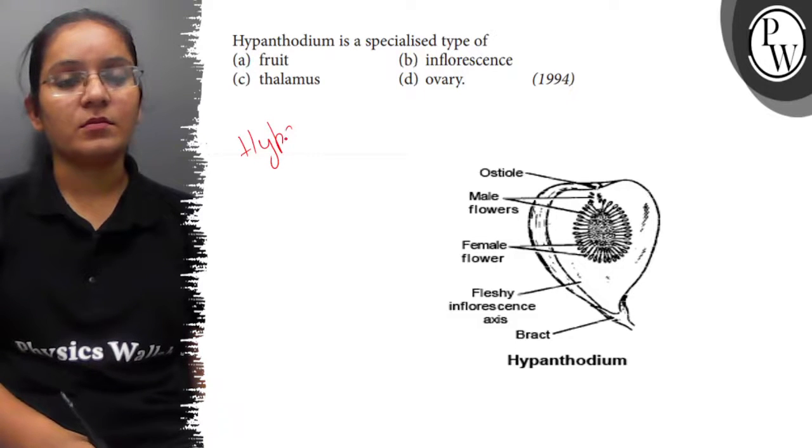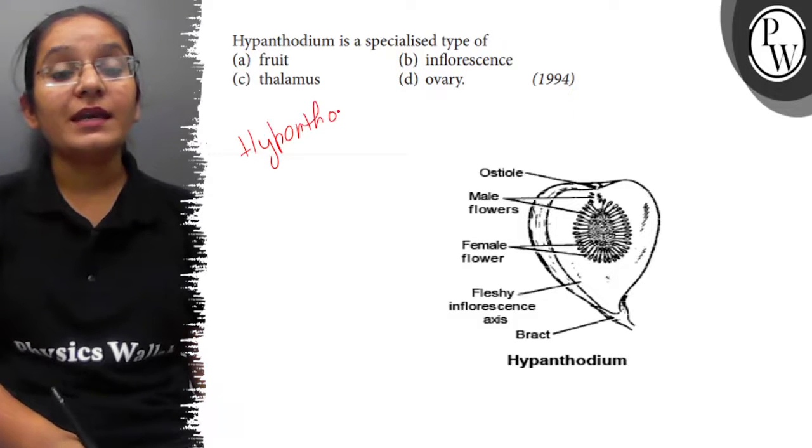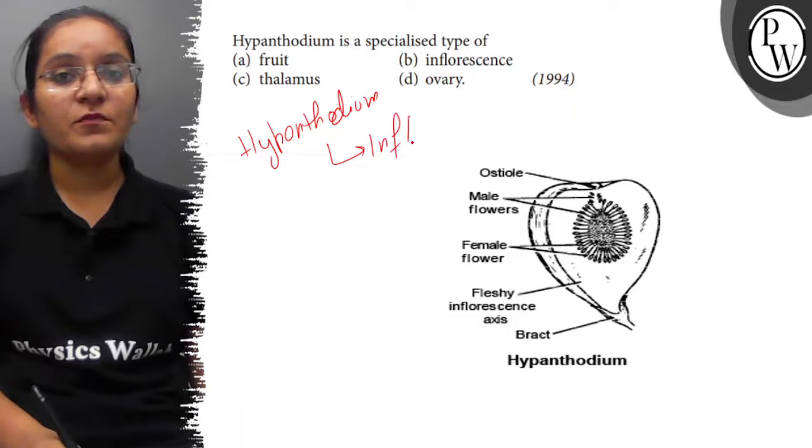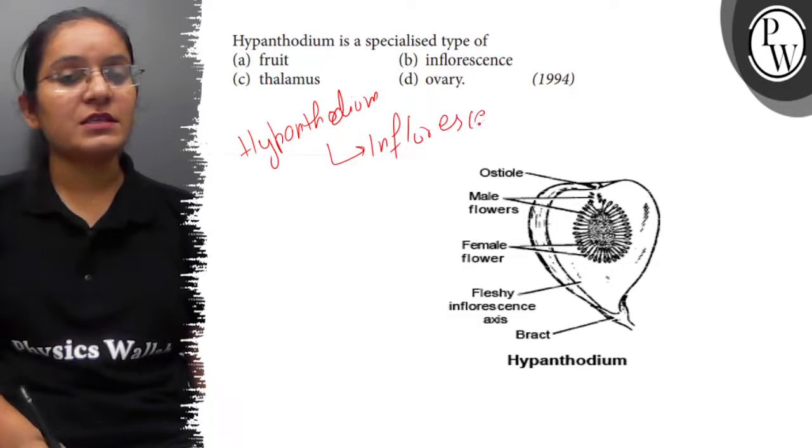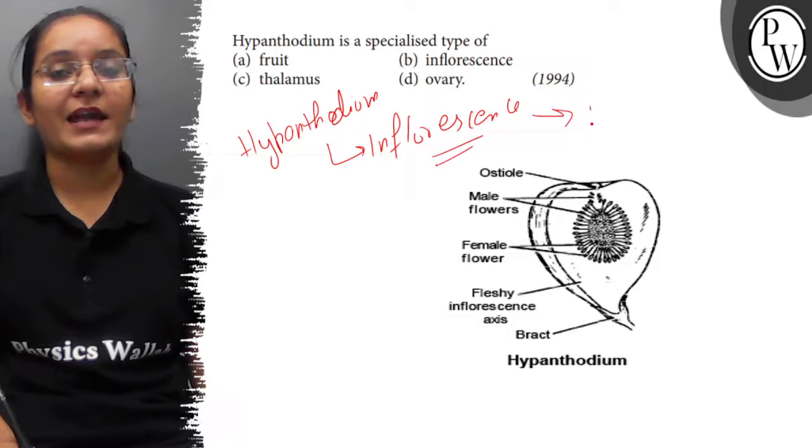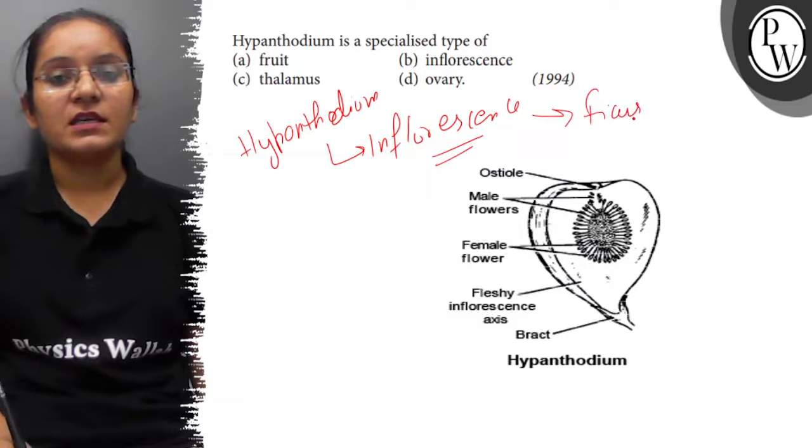Hypanthodium is a special type of inflorescence. Inflorescence is the arrangement of flowers on a floral axis, and it is found in ficus.